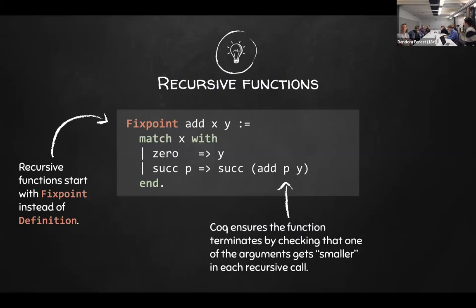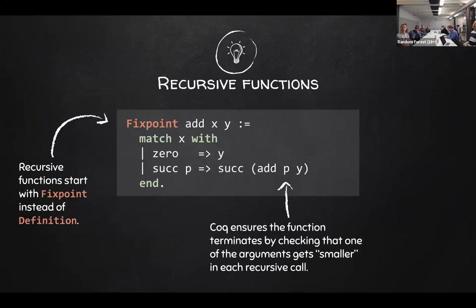When you want to define a recursive function, you have to use a different keyword called 'Fixpoint' instead of 'Definition.' When you use Fixpoint, you're allowed to do recursion — so here there's a recursive call to add. Coq requires that your function is total, meaning it terminates. The way it checks that is it has to see that one of the arguments — in this case x — is somehow decreasing at every recursive call. In the second branch, x is a successor of some other number p (p stands for predecessor), and we recur with the predecessor instead of x, so of course it gets smaller and smaller until we hit the base case.